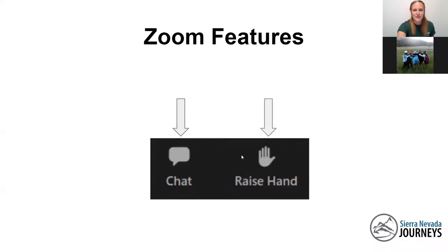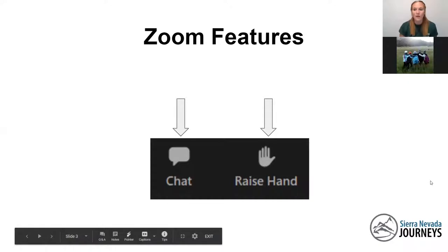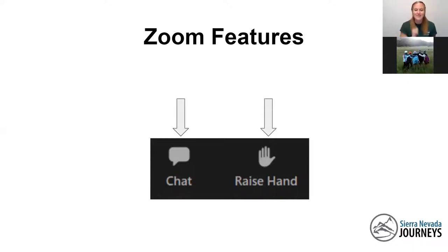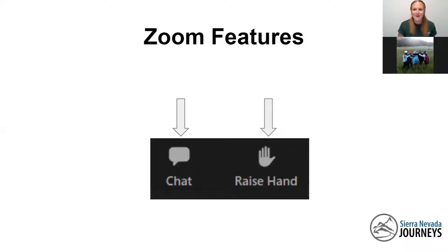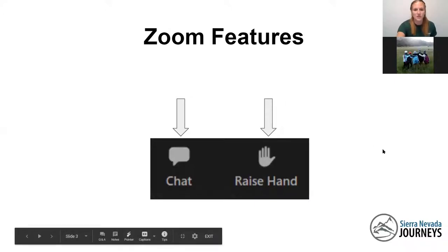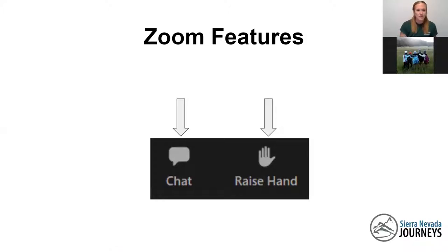The next feature we're going to be using is the raise hand feature. We're going to use that today to check in. When we are doing our different experiments, I might ask you to show me that raise hand feature — that will let me know you're on the same page and ready to move on. Go ahead and find that icon on your Zoom toolbar and raise that hand. If you have your hand raised, you'll notice it shows up as green. Press it again to lower your hand. If you're ever confused, ask a question and Kayla will answer that for you.